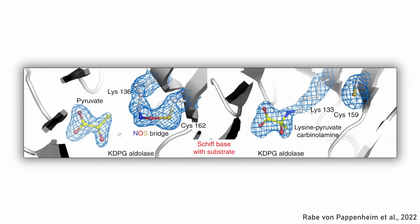NOS bridges also play a role in catalysis. In the KDPG aldolase, for example, the lysine forms an intermediate with the substrate, which isn't possible in the oxidized state.